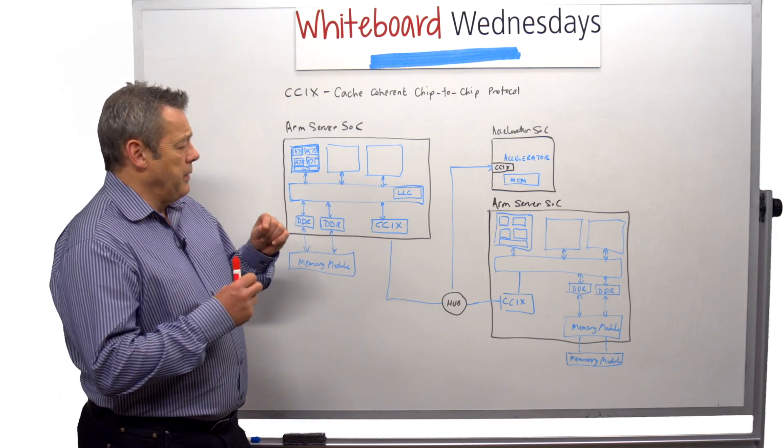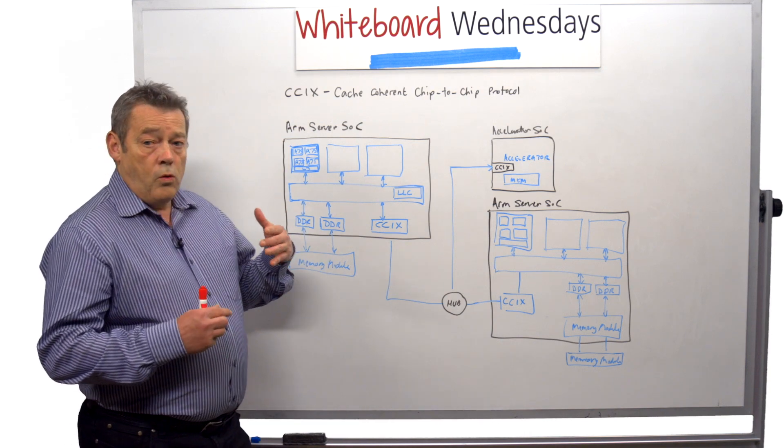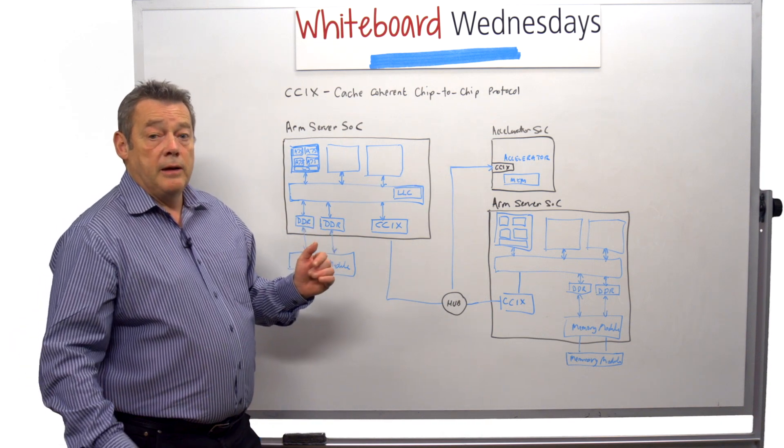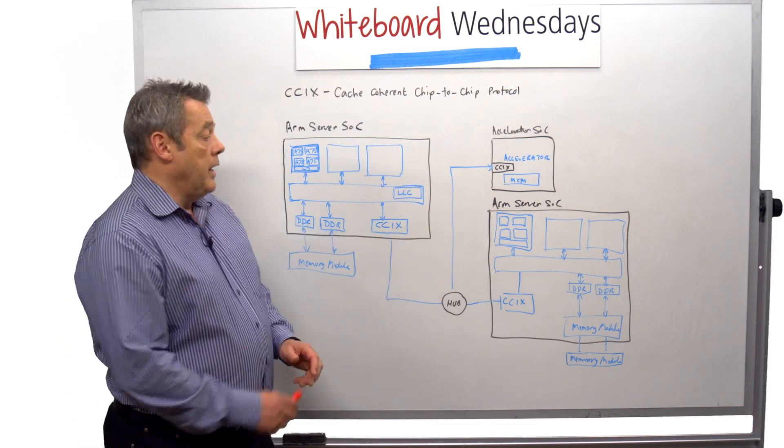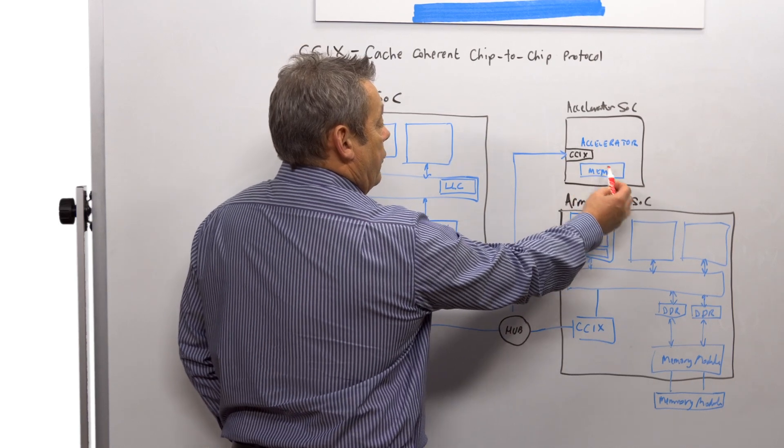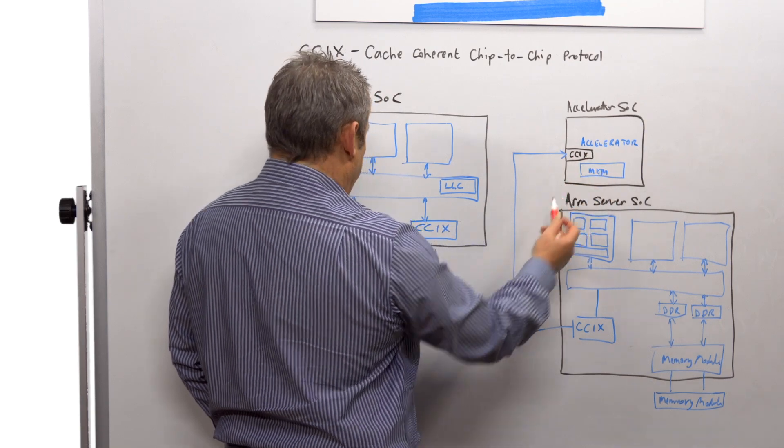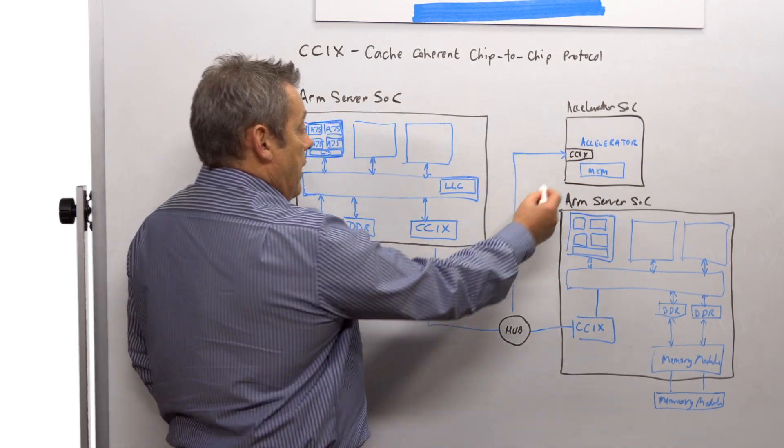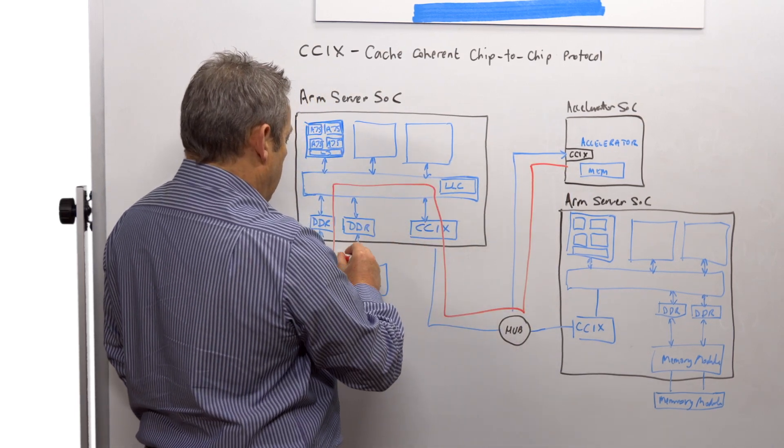So let's look a little bit at what that really means when we say cache coherent. What we're saying with these devices is that they all share memory and that their memory is visible from each other. In other words, from my accelerator SOC, I may have some memory here, but it may be that I want some memory from this cluster. I want to share memory. It may be that we can end up with a request going all the way over to this memory.